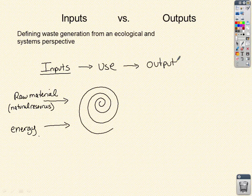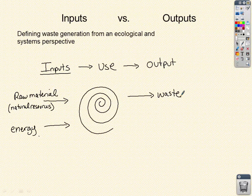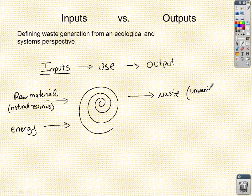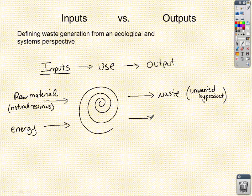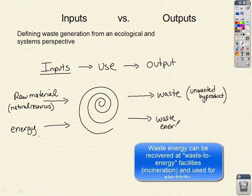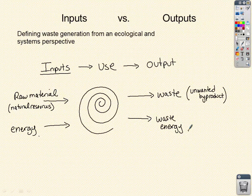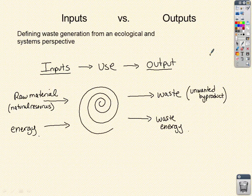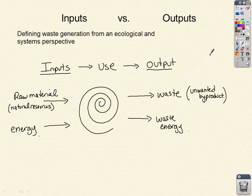There are a couple of outputs when it comes to waste. First is the waste itself — the material part, the unwanted byproduct: anything that can be disposed of or recycled. And like inputs, after the use of a material product, there is also waste energy. Due to the second law of thermodynamics, energy is transformed from one form to another, and any energy no longer useful to us becomes waste energy. This is a generalized view of waste from an ecological and systems perspective.